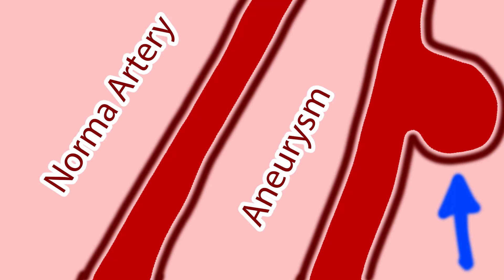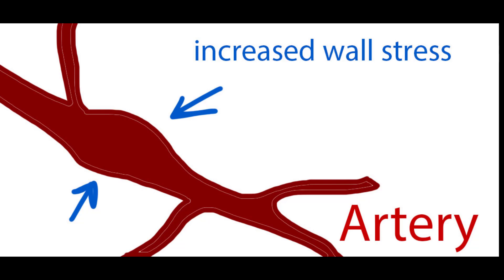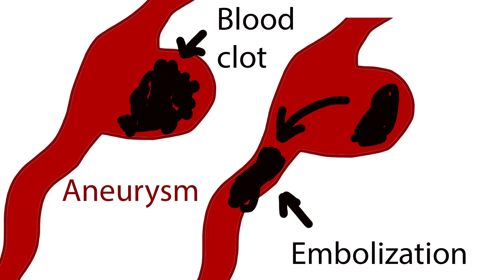An aneurysm is a dilation of a vessel wall due to increased wall stress and vessel weakening, resulting in an outward bulging caused by a localized abnormal weak spot on a blood vessel wall. Aneurysms may be genetic or acquired.